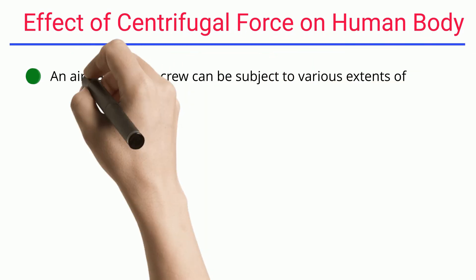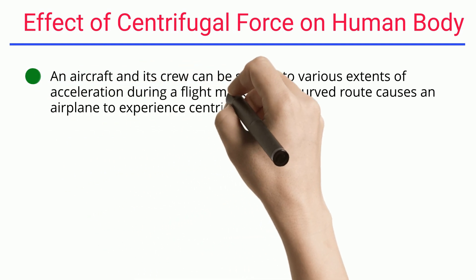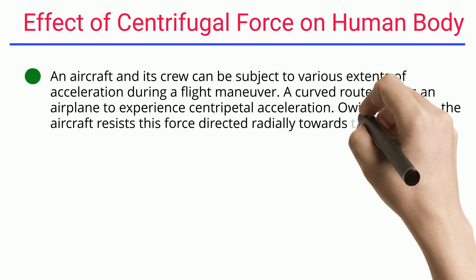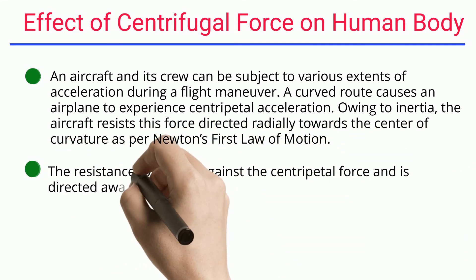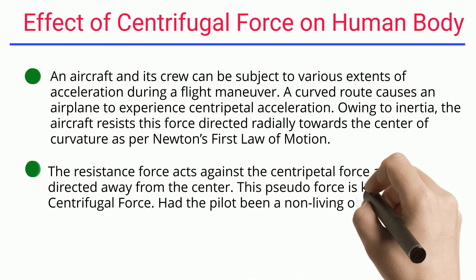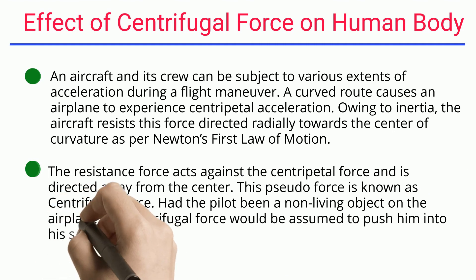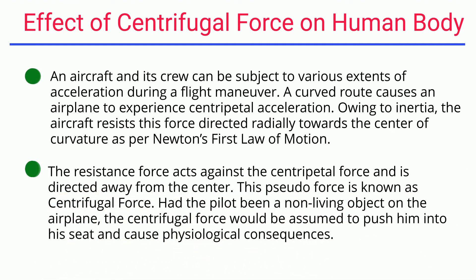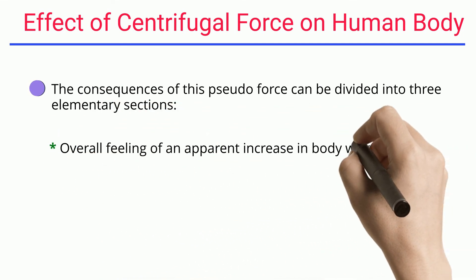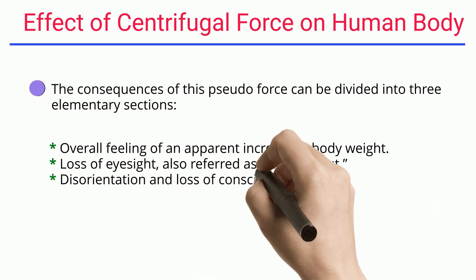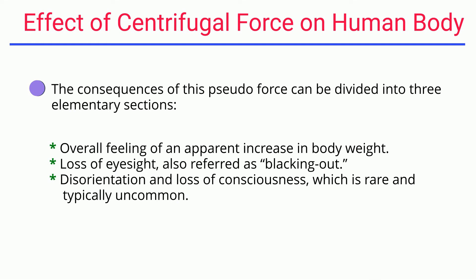An aircraft and its crew can be subject to various extensive accelerations during flight maneuvers. A curved route causes an airplane to experience centripetal acceleration, and owing to inertia the aircraft resists this force directed radially towards the center of curvature, as per Newton's first law of motion. This resistance force acts against the centripetal force and is directed away from the center — known as centrifugal force. The consequences of this pseudo force can be divided into three elementary sections: an overall feeling of an apparent increase in body weight, loss of eyesight (also referred to as blacking out), and disorientation and loss of consciousness, which is rare and typically uncommon.